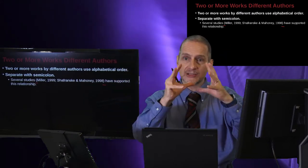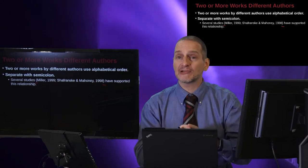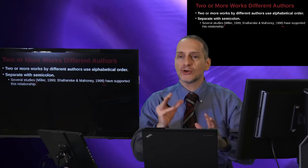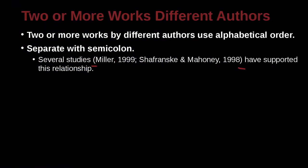You're taking many ideas, putting the main things together like a kind of puzzle, like a block. So in this case, how do we put those together? Because we have one paper from Miller and one paper from Schofransky and Mahoney. We're going to use alphabetical order — M comes before S.